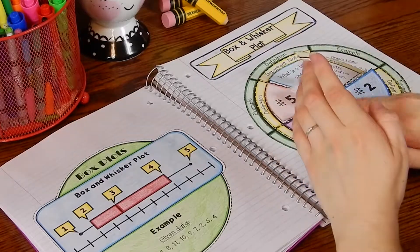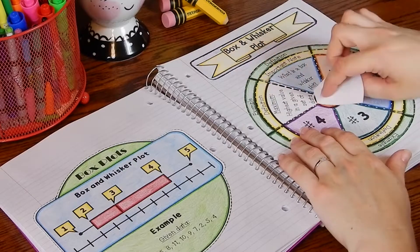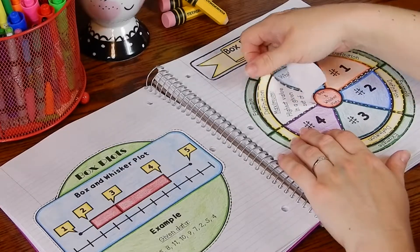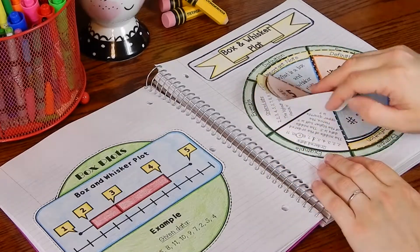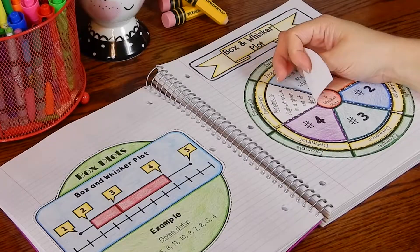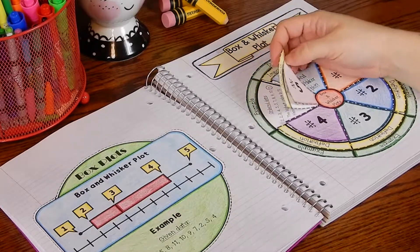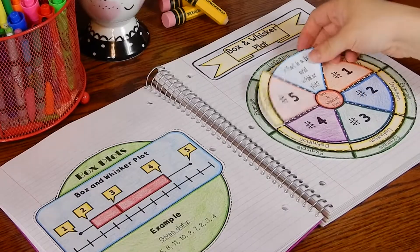Now you can have this already printed with the answers like I already have, or you can have it blank and students will fill in the information. You can also have it to where one layer is filled in and then the other layer isn't and students will have to fill that in.